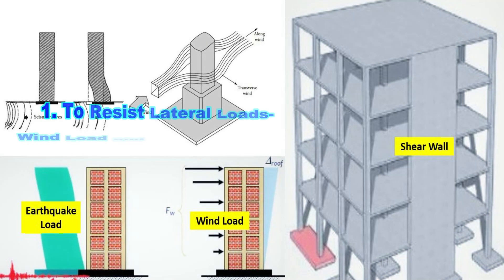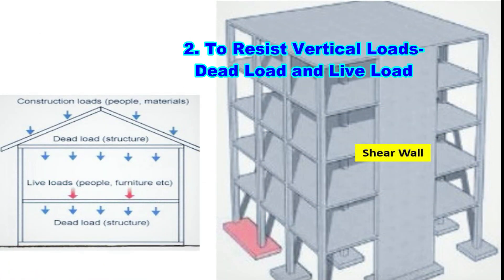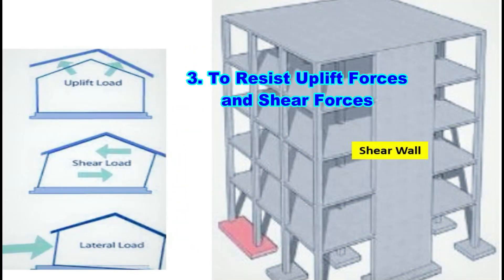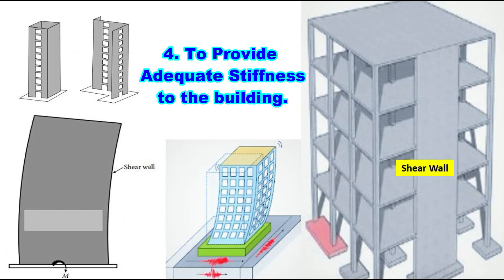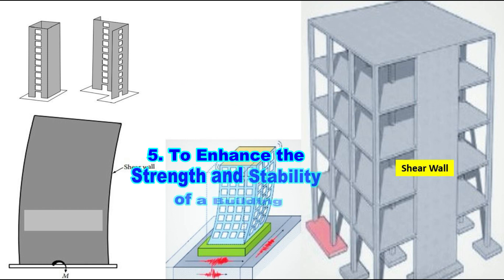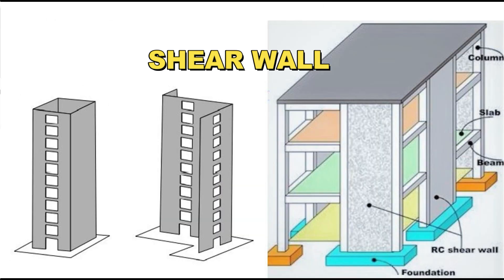The purpose of providing shear wall is to resist lateral load due to wind and earthquake loading, to resist vertical loads such as dead load or self-weight and live loads, and to resist uplift forces and shear force on the building. Additionally, shear walls provide adequate stiffness, and enhance the strength and stability of the building.